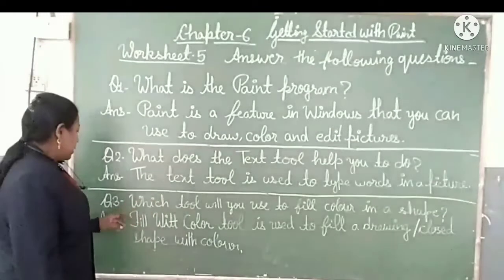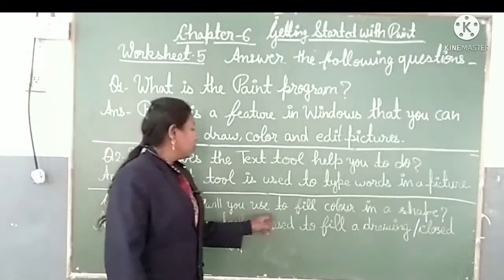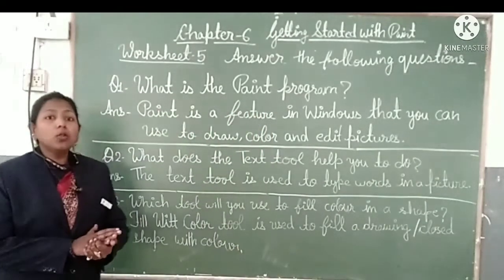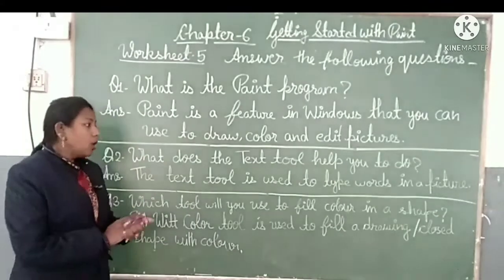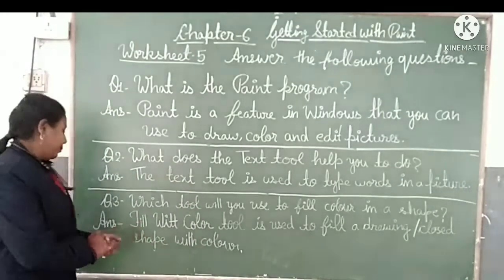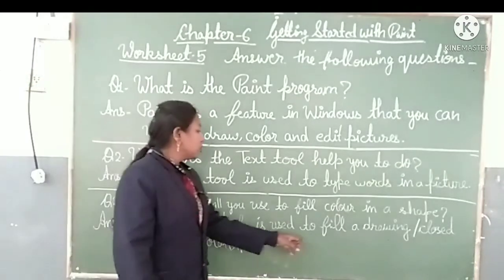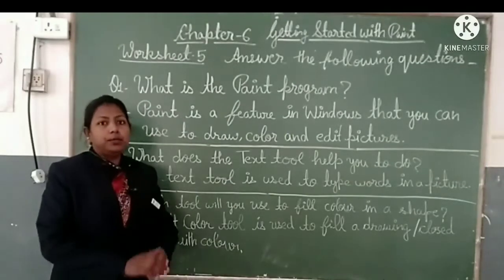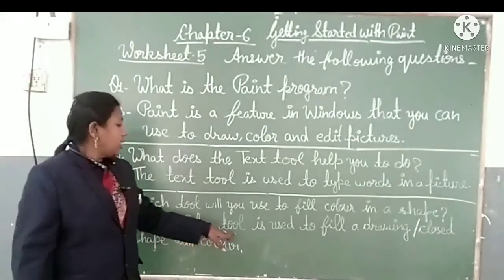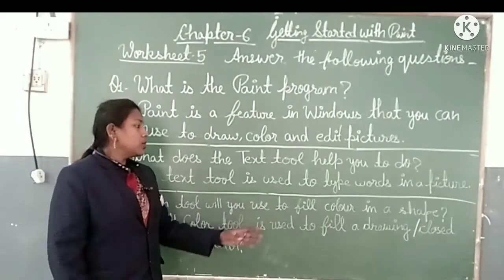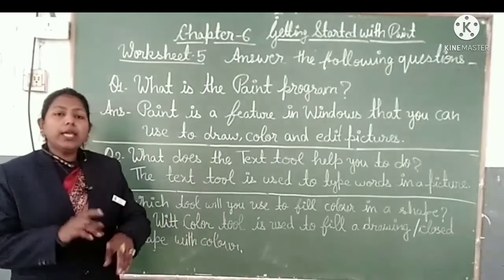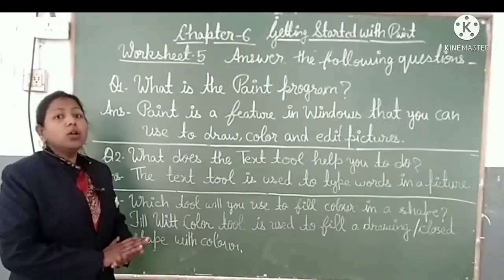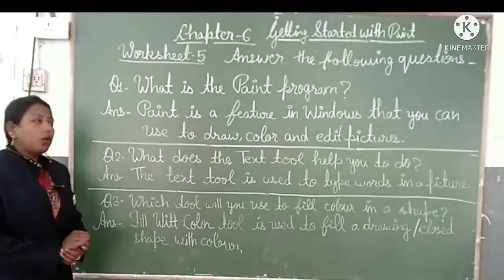Now your third question is: Which tool will you use to fill color in a shape? That means, which tool do we use to fill color inside a shape or figure? The answer is: the Fill with Color tool is used to fill a closed drawing shape with color. We use the Fill with Color tool to fill color in a closed area or shape.